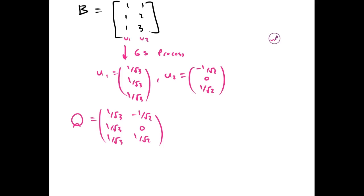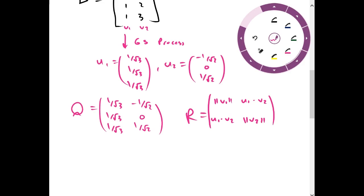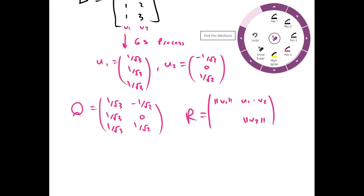But our R is going to equal magnitude of V1 and magnitude of V2 as its diagonal entries, and the dot product of U1 and V2 as its other entries. And this is going to be 0. So this is just using the formula for R.